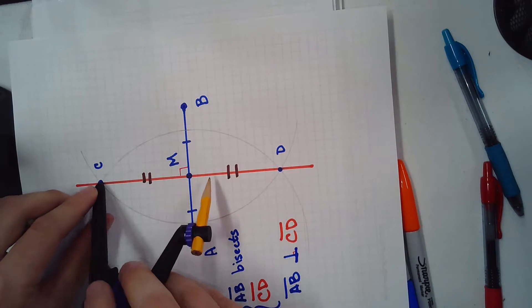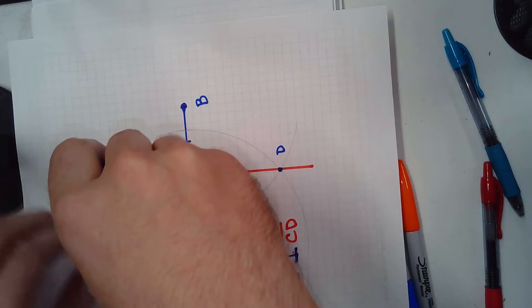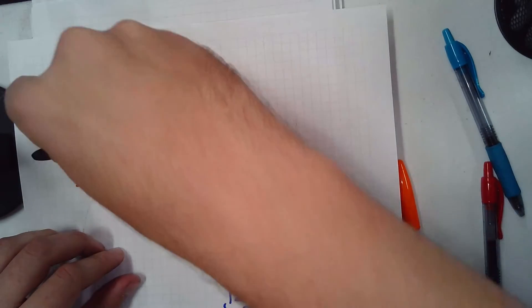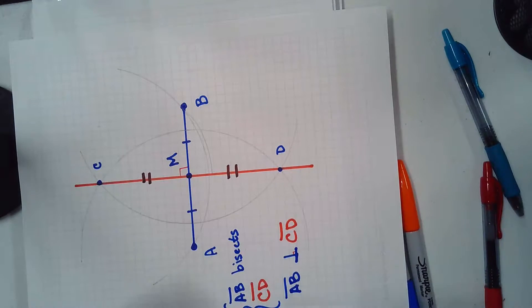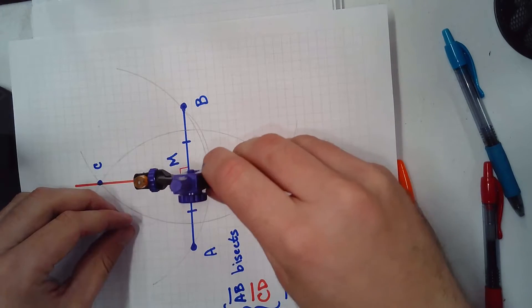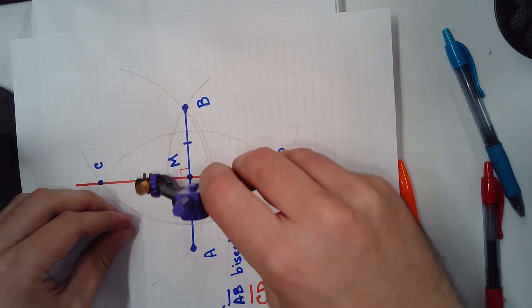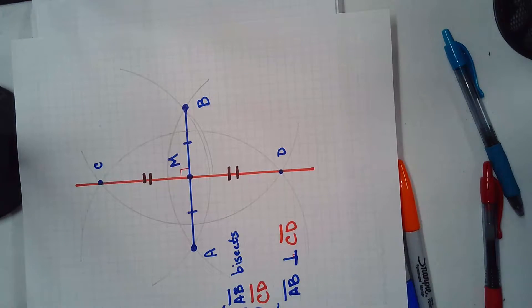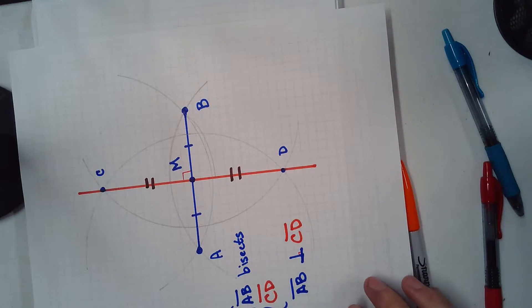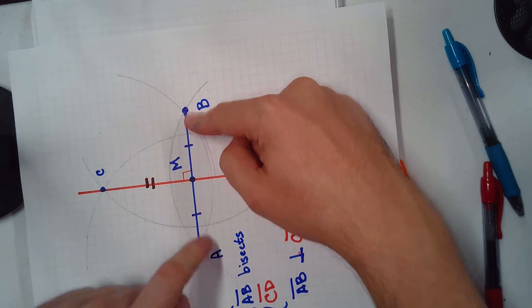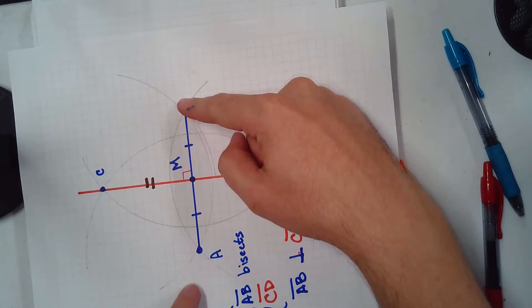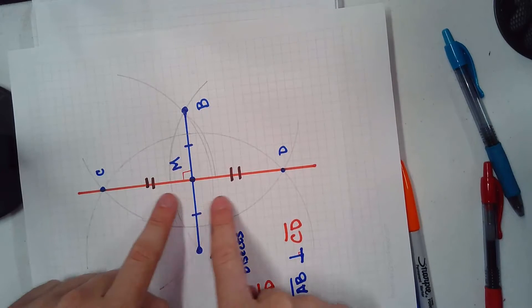So, extend your compass to be more than halfway. I'm going to use the same setting I had before. And watch what happens. If you have the same setting you had before, you'll notice that the arc goes through B and A. If you have the same setting as before, which you don't have to do. I know. And look what it does. Then what did we do after we found those intersecting points? We drew our segment, didn't we?